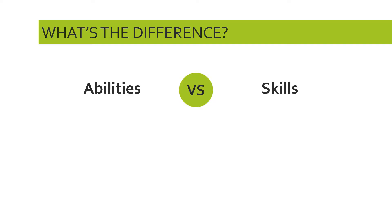So first, let's do some definitions. What is the difference between abilities and skills? The first key distinction is that abilities are innate, whereas skills are learned. That word 'innate' literally means something that you're born with — it's part of who you are, in terms of your physical or psychological makeup. A skill, on the other hand, is something that you learn, something that you acquire.